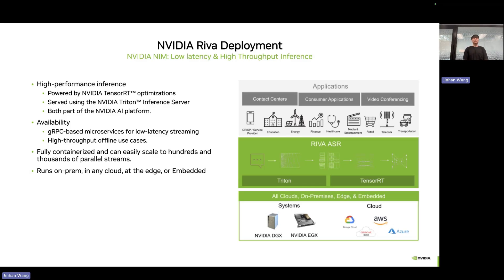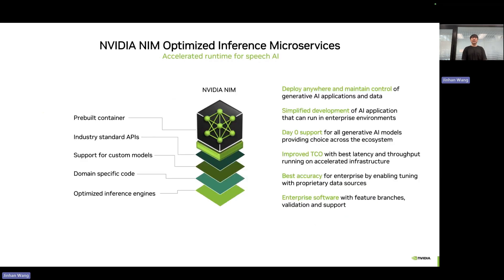The trained model is deployed to NVIDIA RIVA through NVIDIA NIM for low latency and high throughput inference. High-performance inference is powered by NVIDIA TensorRT optimizations and the NVIDIA Triton Inference Server, available as a gRPC-based microservice for low-latency streaming and high-throughput offline use cases. NVIDIA RIVA is fully containerized, can scale to hundreds of parallel streams, and can be run on-premise, in any cloud, at the edge, or on embedded platforms — supporting contact centers, consumer applications, and video conferencing. NVIDIA NIM offers pre-built containers, industry-standard API support, and optimized inference engines.